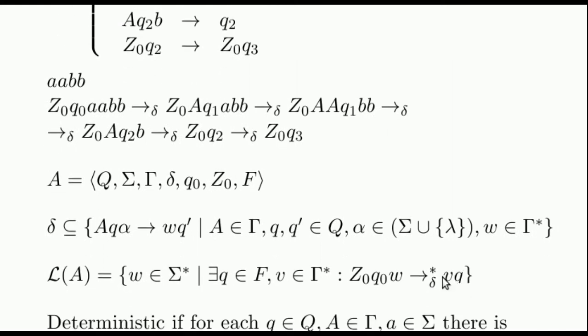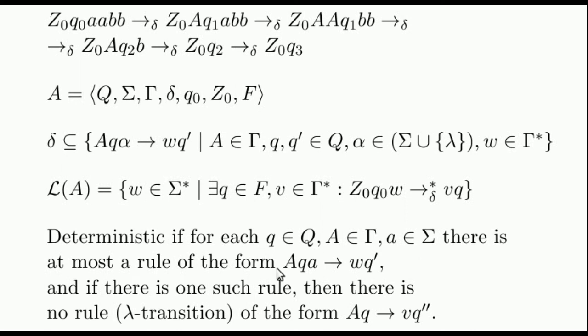We say that the automaton is deterministic if each configuration allows just one rule to be applied. Note that the definition differs from the one used for finite automaton, where we also impose that a transition was always possible.